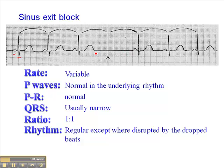The big difference here, though, is that if you look at the R-to-R interval, there's a pause. Something happens here that's different. First and foremost, there's only one dropped beat. And then the next beat falls exactly into sequence, exactly into sequence from the underlying rhythm.